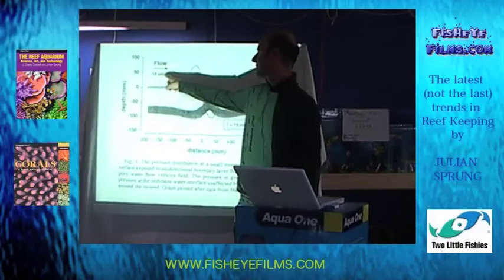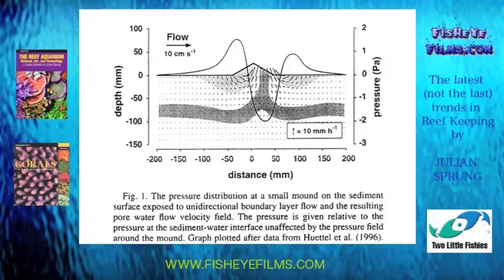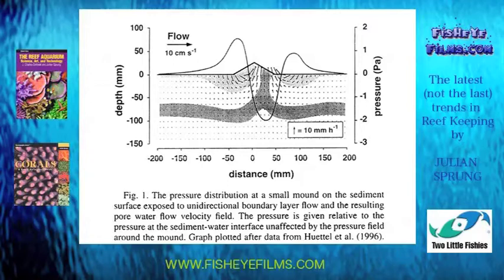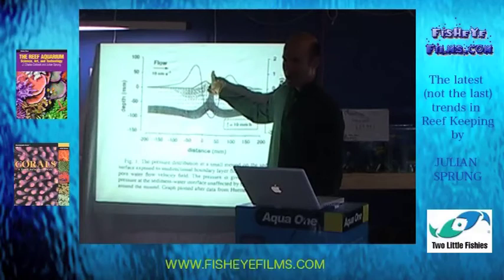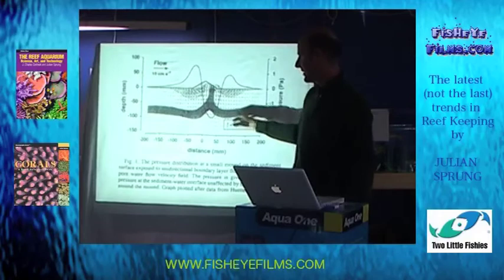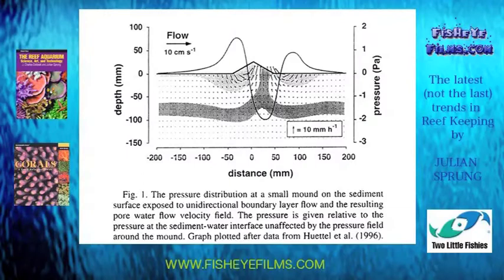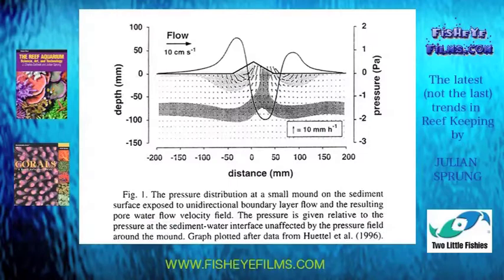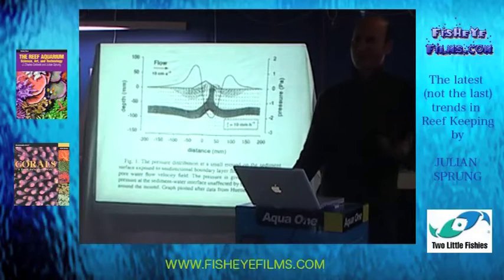What you have is a buildup of pressure right in front of that pile, and then a little vacuum on the backside, and then another buildup of pressure. That sets up water flow where, at the high-pressure zone, water enters the sand. In the low-pressure zone, water within the sand gets sucked and pulled right up out. If you were to inject dye into the sand bed three inches down, you would see the dye get pulled up and out. As that water flows through the sand, bacteria develop that consume oxygen and break down the waste. You don't need an undergravel filter to use a sand bed — all you need is water moving.